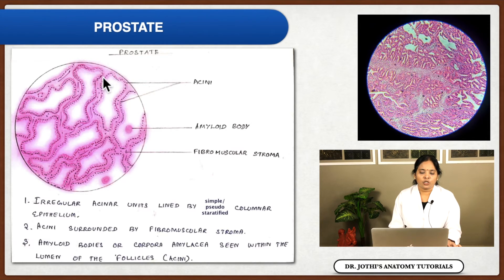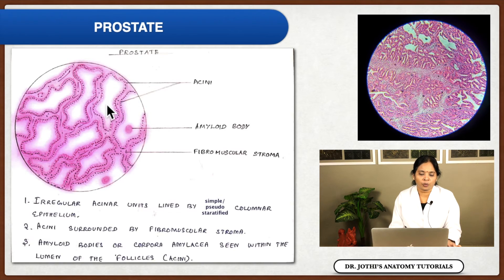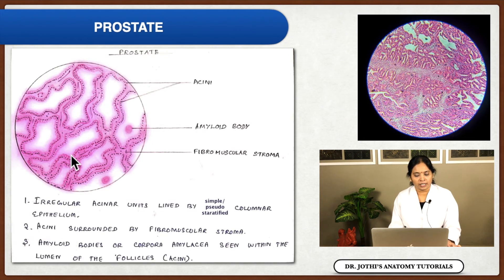The parenchyma of the prostate is a tubuloalveolar gland. The tubular glands have a mucosa thrown into folds, and the acinar units are rounded structures lined by columnar cells. From the capsule, septa enter the gland dividing it into lobules. Within the lobules, you will see glandular epithelium thrown into folds. The glandular epithelium is lined by simple or pseudostratified columnar epithelium, and the stroma is fibromuscular stroma.